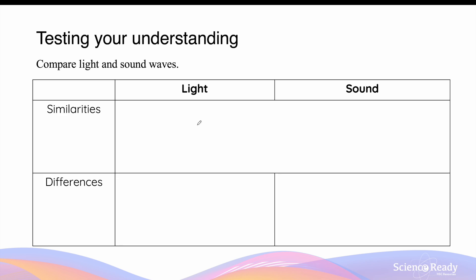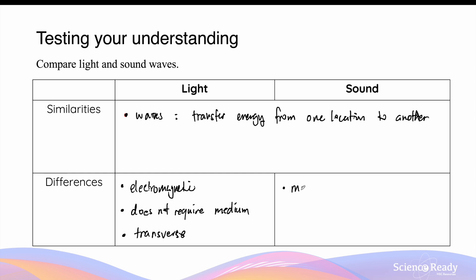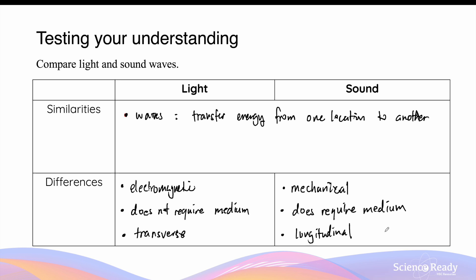As a way to test your understanding from this introduction to waves video, let's compare light and sound waves using a table layout. Starting with similarities: both are classified as waves, which means they transfer energy from one location to another. For differences: light is classified as an electromagnetic wave, which means it does not require a medium to travel in, and electromagnetic waves are always transverse in nature. In contrast, sound waves are mechanical waves, which means they do require a medium to travel in. In particular, sound waves are classified as longitudinal waves, because the direction of particle oscillation is parallel to the direction of propagation.